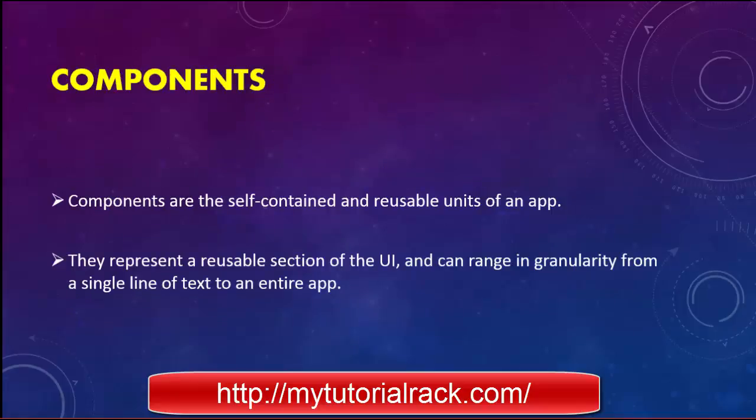The Lightning application is made up of small, different, independent, self-contained components. To understand what components are, consider Toyota as an example. Toyota does not build each and every component of the car — from engine to seats to the body — by themselves. They have different companies who provide these different components: one company builds engines, another builds the car body, another builds the seats, and so on.